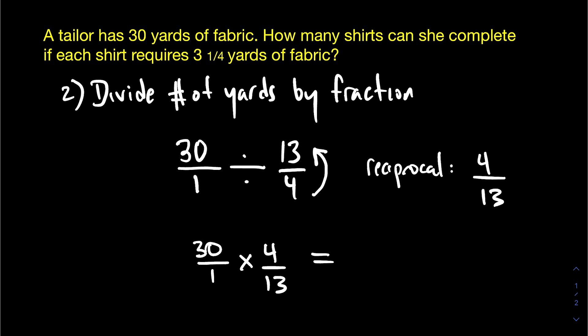So thirty times four, that gives us in the top 120 divided by thirteen and that gives us nine shirts.